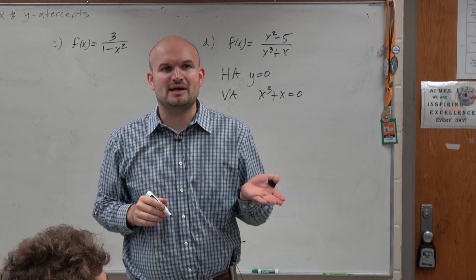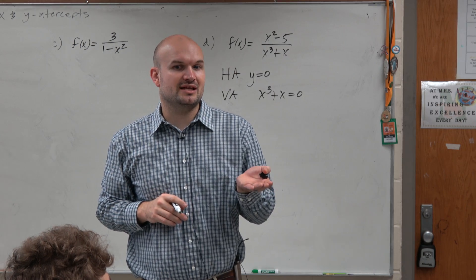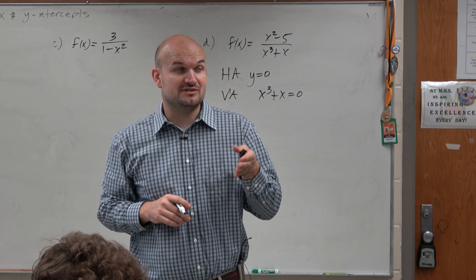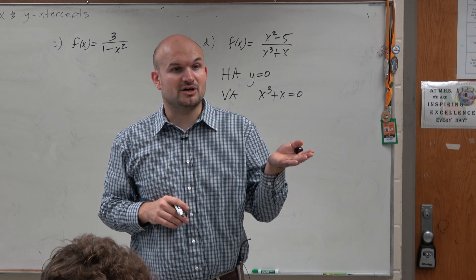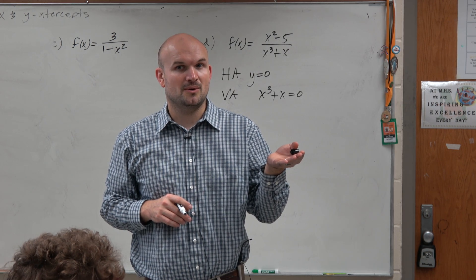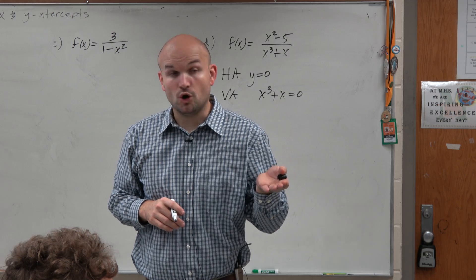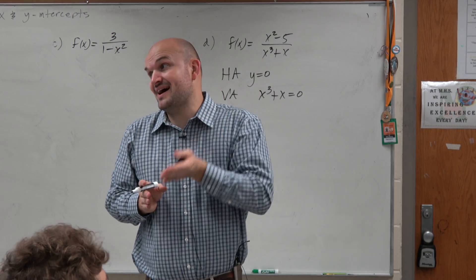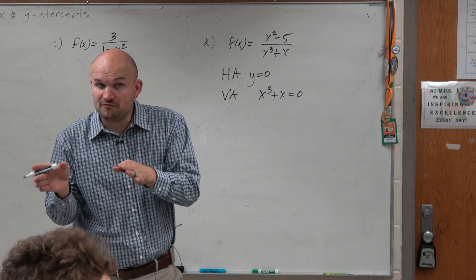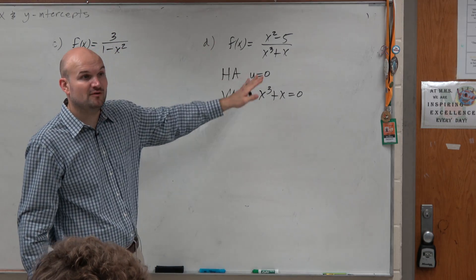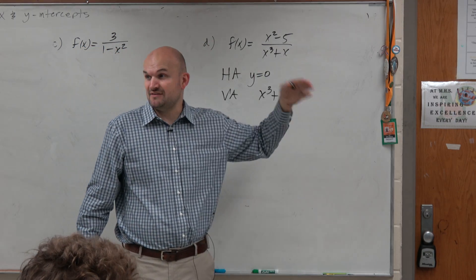Because what else could actually happen? We could have values that make the function 0, but are not vertical asymptotes, because they are holes, right? But remember, holes get divided out. So it is helpful to always try to see if you can simplify this by factoring to identify any holes.